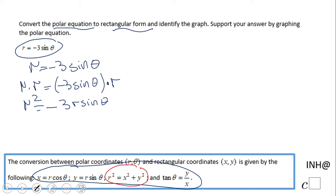You see, R squared equals x squared plus y squared, and the other one obviously is this one where y equals R sine of theta. I'm going to put here minus 3y.